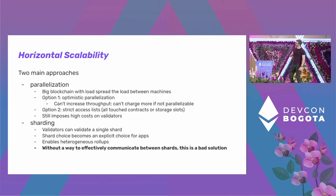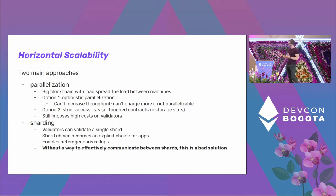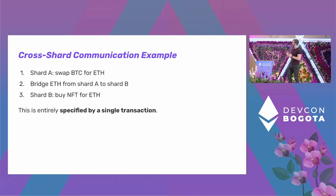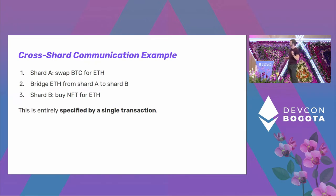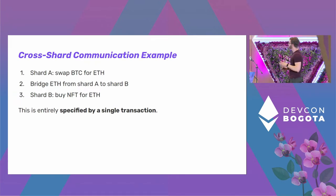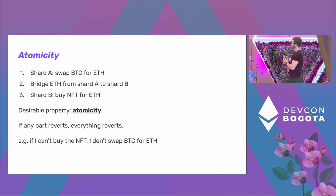The great thing is we can do heterogeneous rollups — customized with different VMs, fee models, and so on — and they can all talk to each other. The problem with sharding is that if there's no effective way for shards to talk to one another, it's a bad solution. As you guessed from the title, this is about atomic composability. For example: a transaction that swaps Bitcoin for Ether on shard A, bridges the Ether to shard B, and on shard B buys an NFT for Ether. One very desirable property is atomicity — if any part reverts, everything reverts.